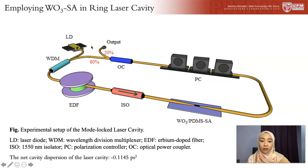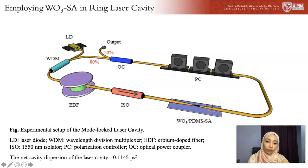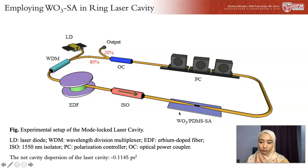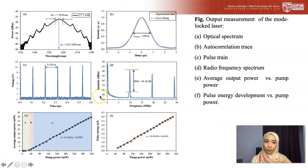This is the laser setup. Without the saturable absorber it emits continuous wave laser emission. When we integrated this saturable absorber into the laser cavity, we wanted to see if pulse laser generation occurred and how good the performance was. This is the output measurement of the mode-locked laser, and right off the bat we can confirm that the pulse laser works.